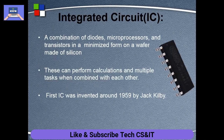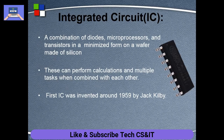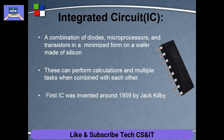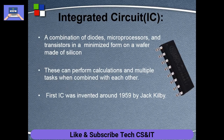Basically, what are integrated circuits? An integrated circuit is a combination of diodes, processors, and transistors in a minimized form on a wafer made of silicon. When we have diodes, microprocessors, and transistors together, that means we have an integrated circuit.